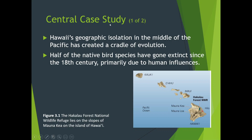The central case study for this chapter is Hawaii. It talks about geographic isolation in the middle Pacific — it's almost a closed system, with very little coming in. Half the native bird species have gone extinct since the 18th century, and this is primarily due to human influences.